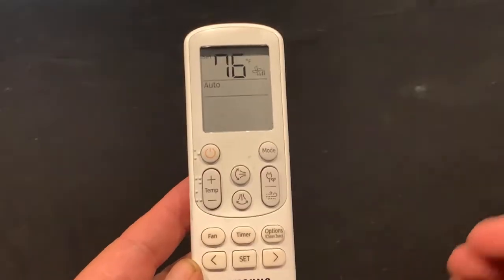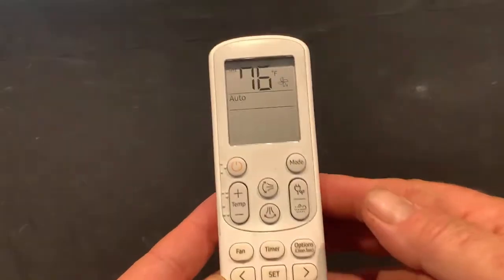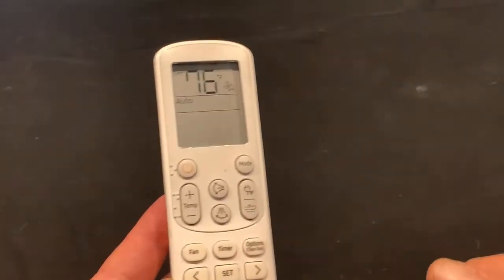The reason we'd want to set the fan to thermal off is so that the indoor fan would cycle off with the condenser when it reaches temperature, which is going to help reduce humidity in the home.